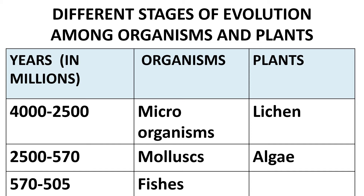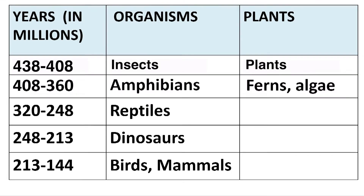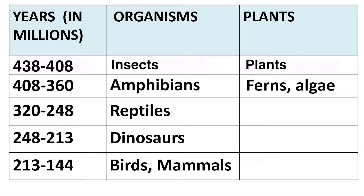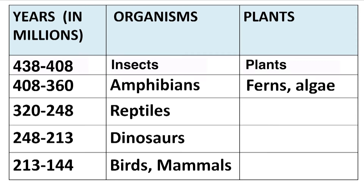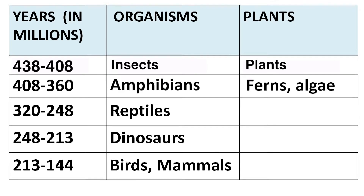Molluscs are invertebrate animals. Examples are starfish and octopus. Among plants it was algae. From 570 to 505 million years ago, fishes evolved on the earth. Between 438 to 408 million years ago, insects evolved. Between 408 to 360 million years ago, it was the amphibians. Amphibians are animals which can live both on land and water — for example, the frog. Among plants, ferns and algae originated.